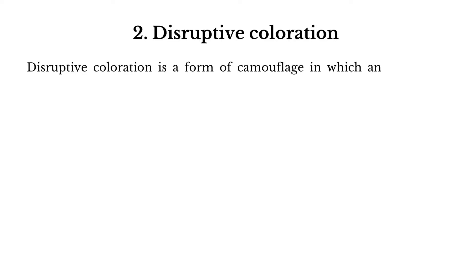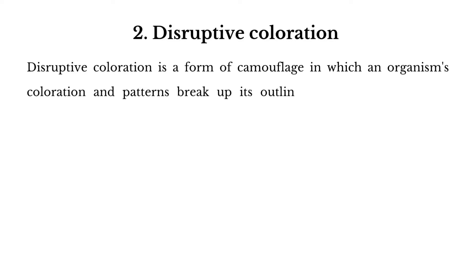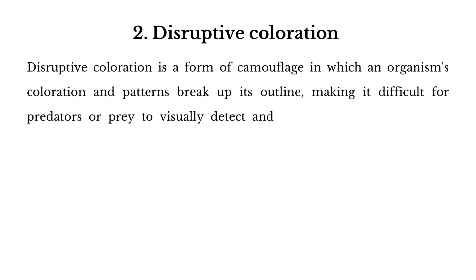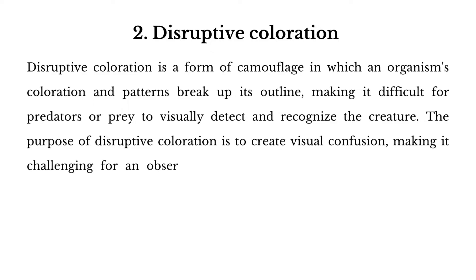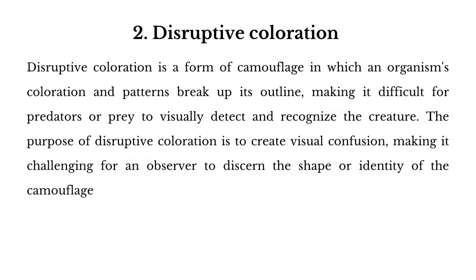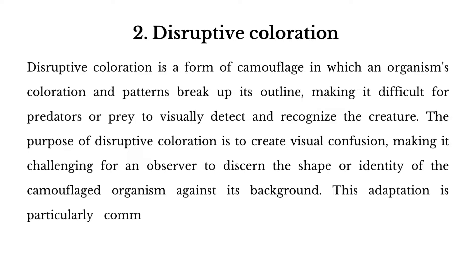2. Disruptive coloration. Disruptive coloration is a form of camouflage in which an organism's coloration and patterns break up its outline, making it difficult for predators or prey to visually detect and recognize the creature. The purpose is to create visual confusion, making it challenging to discern the shape or identity of the camouflaged organism. This adaptation is particularly common in animals that live in complex or varied environments.